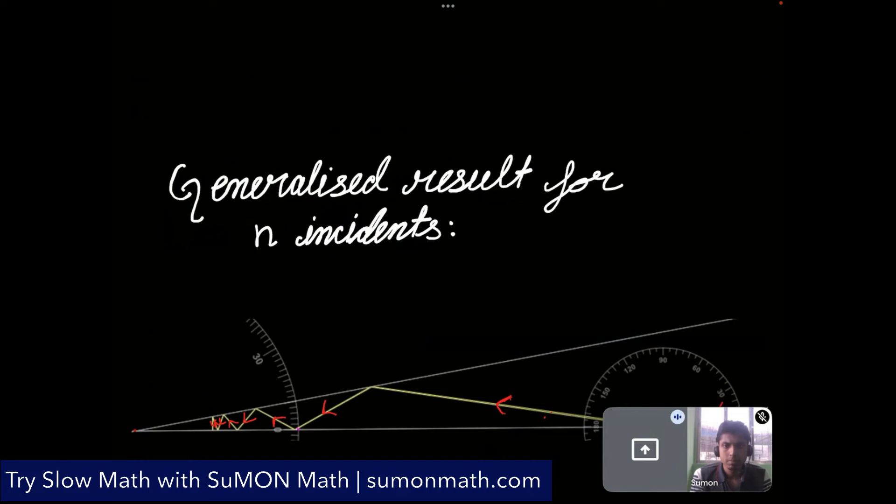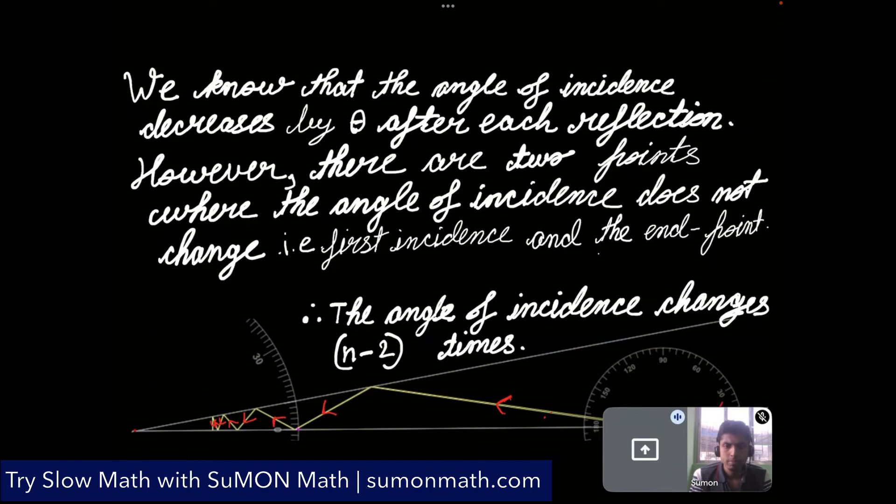Now we have proved this for four incidence. Now we will see for n incidence. In n incidence, by our observation, we note that the angle of incidence decreases by theta after every reflection. But there are two exceptions for this. First, there is the first incidence where the angle of incidence does not change. It is the first incidence and the end point where it does not change. It just retraces its path. So the angle of incidence changes n minus 2 times excluding the two regions. This means that the angle of incidence decreases by theta n minus 2 times which means the final angle of incidence will be i minus n minus 2 into theta.